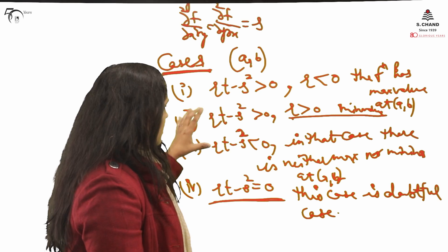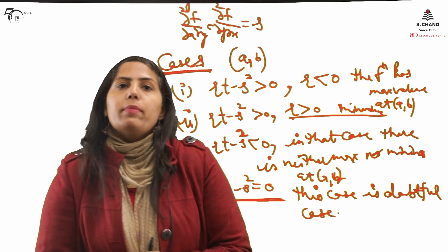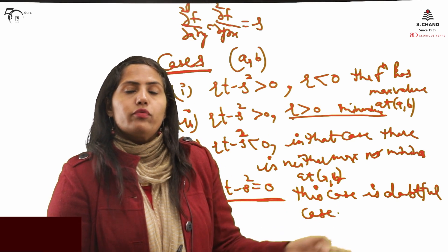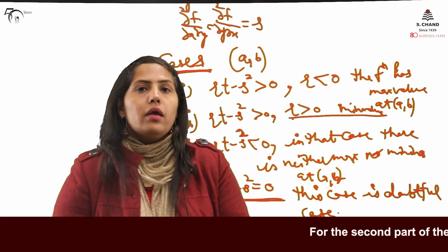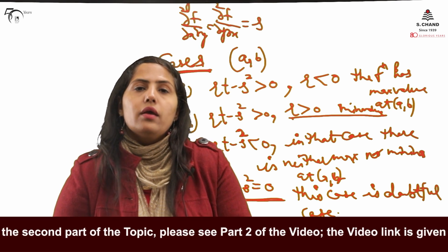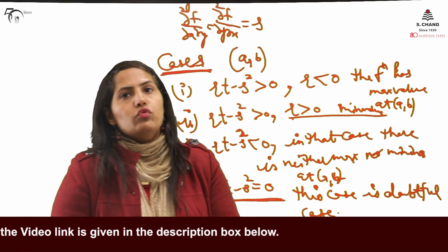So this is the working or this is the procedure, and we will be using this procedure and we will be finding the maxima and minima for the particular function of two variables. This is the end of the part one. We have learned how to find the working of finding maxima and minima. In part two I will be taking the examples and we'll see how we find practically maximum and minimum values of a function of two variables.